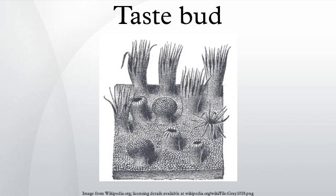Types of papillae: the majority of taste buds on the tongue sit on raised protrusions of the tongue surface called papillae. There are four types of lingual papillae present in the human tongue. Fungiform papillae — as the name suggests, these are slightly mushroom-shaped in longitudinal section, and are present mostly at the dorsal surface of the tongue as well as at the sides.